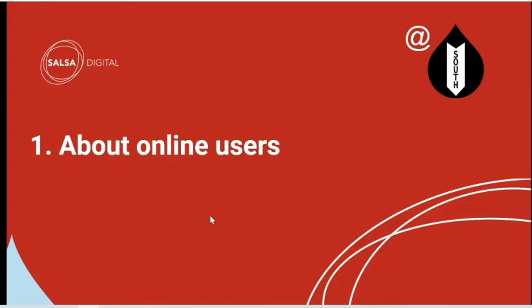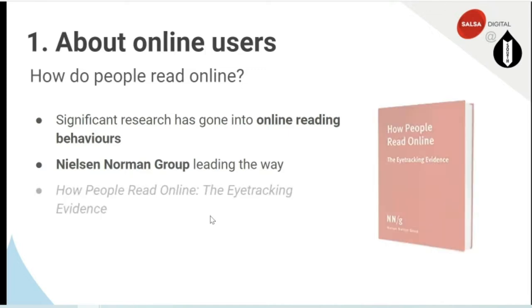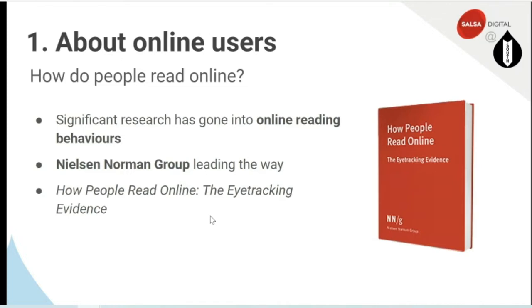So let's have a look at some information about online users. How do people read online? There's actually quite a lot of research on online reading behaviours. The Nielsen-Norman Group are leading the way — I've been in this since 1999, and even then Nielsen had already produced a lot of research around how people read and the best way to write for online users. A more recent one is 'How People Read Online: The Eye-Tracking Evidence.' It's quite an interesting, detailed report, something you might want to look at purchasing and reading.